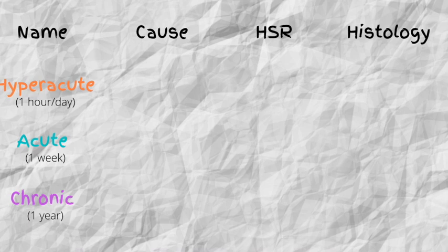Just remember: hyper-acute, acute, chronic — one day, one week, one year. And you are already one step closer to getting all questions about this right.